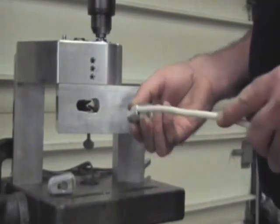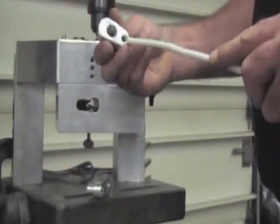Here we are setting up the unit for number 6 gauge wire by changing the insert and adjusting the cutting wheel.